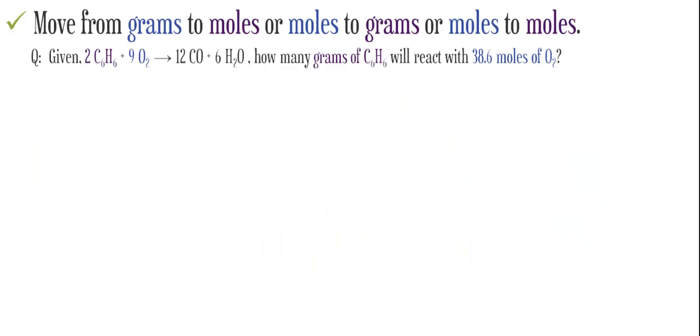Stoichiometric conversions are simply two mole conversions pushed together back to back. Here we'll move from grams to moles or moles to grams or perhaps moles to moles.